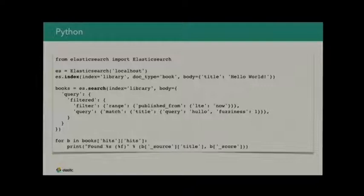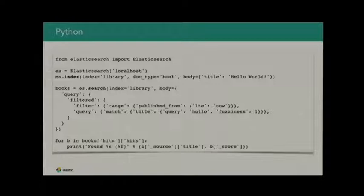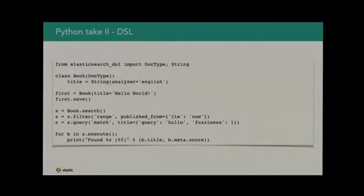How do you actually use it? Here is a very simple example from Python. You can just create a connection, index a document into it, and then run a search to get results. This works and there's nothing wrong with it, but it's not very convenient. Writing the queries — which are also JSON, or Python dictionaries in this case — can get really hard and messy quickly.